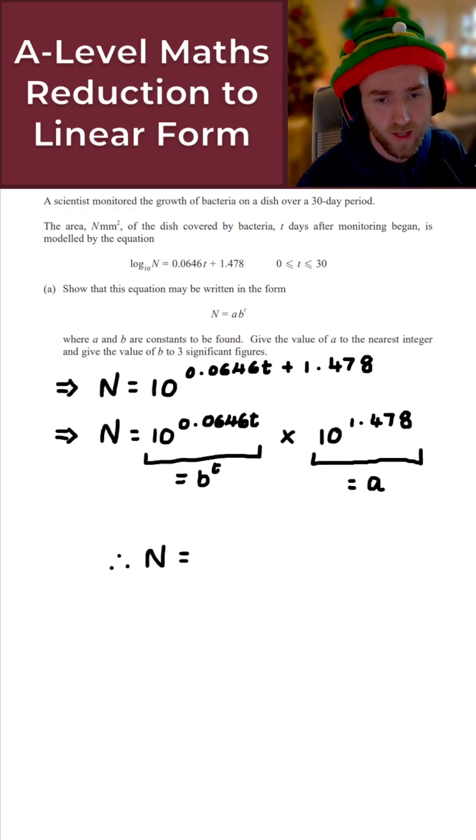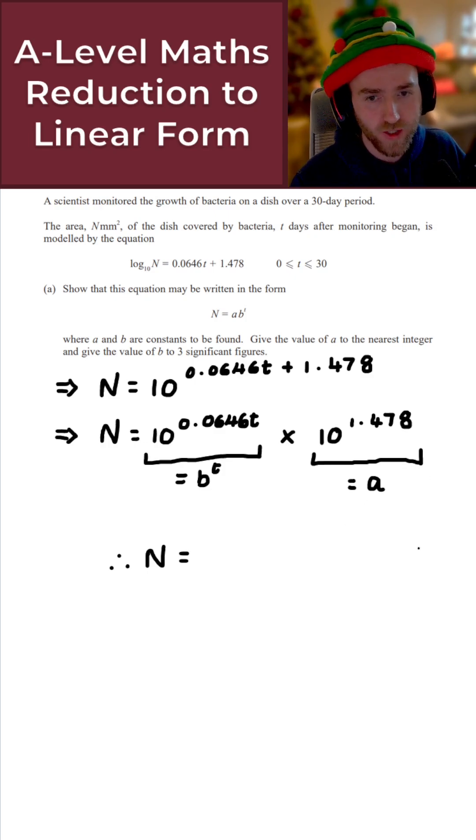So all we need to do here is just grab our calculators. So once you've got your calculator, just put both of these into your calculator. The 10 to the 0.0646T - you just need to enter that as 10 to the 0.0646. So B to the T is just the same as 1.16 to the T.